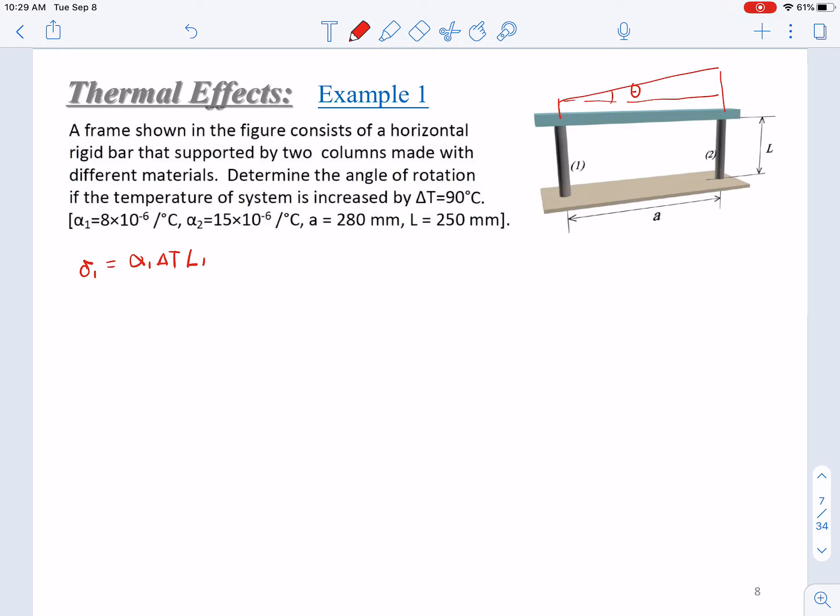So L₁=L₂=L, both equal L. Here it will be 8×10⁻⁶ × 90 × 250 mm, and we get δ₁=0.18 mm.